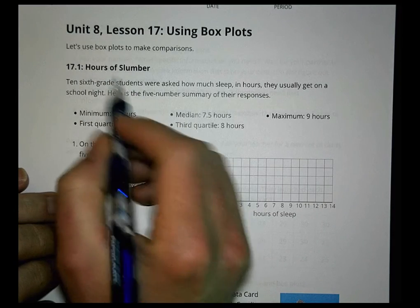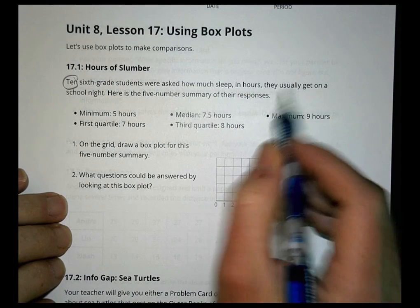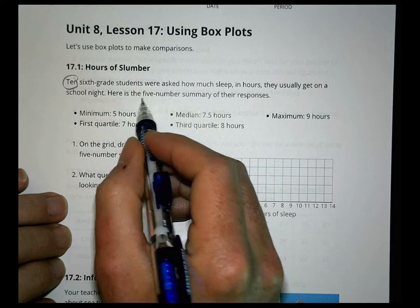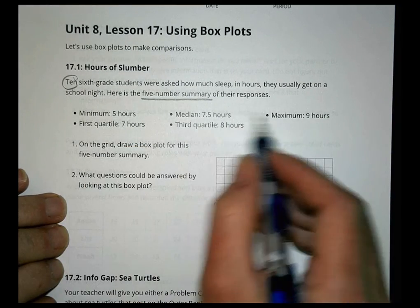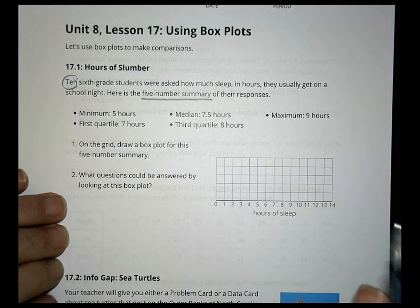Okay, so first of all, we have a little story about slumber. It says that ten sixth grade students were asked how much they sleep in hours, and they usually get on a school night. Here's the five-number summary statement: minimum and maximum, the median, first and third quartile. It says on the grid, draw a box plot.